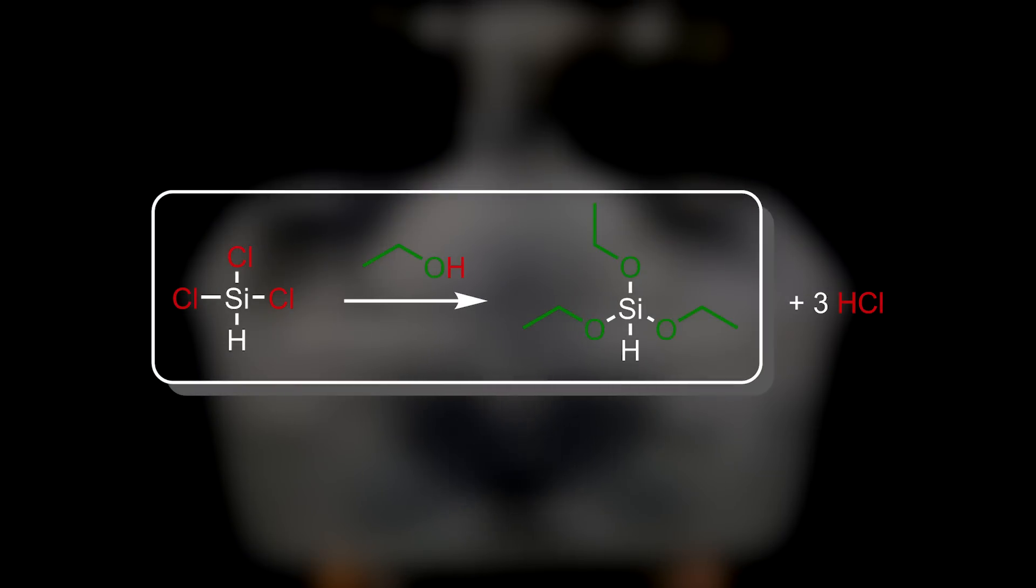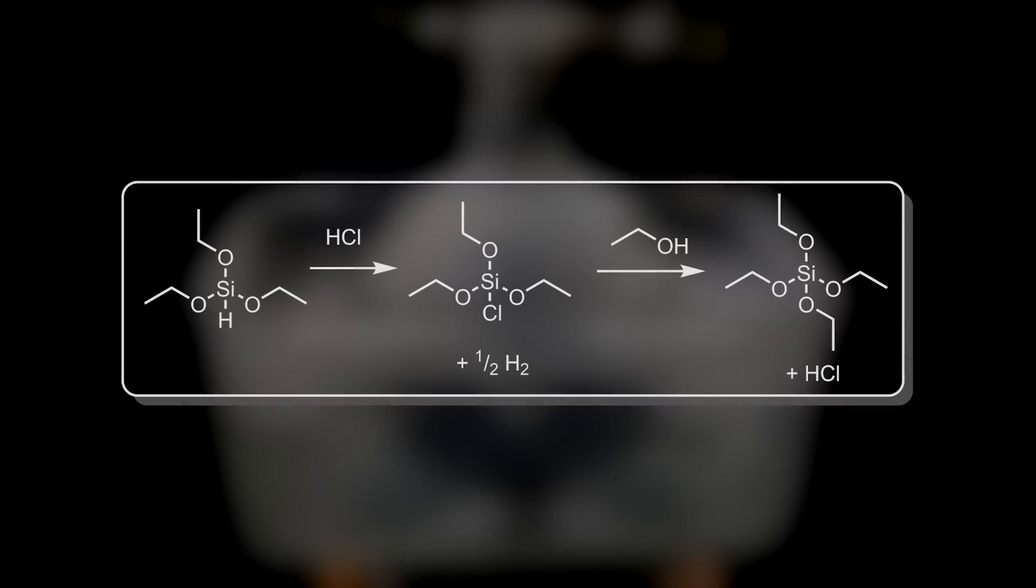In this reaction, trichlorosilane reacts with ethanol, replacing all the chlorines with ethoxide groups, giving triethoxysilane and hydrogen chloride, that mostly bubbles out of solution. There is also a second unwanted reaction taking place here, where the produced triethoxysilane reacts with hydrogen chloride, forming chlorodiethoxysilane. This can then react with another molecule of ethanol, forming tetraethoxysilane as the major side product. Even if we add only three equivalents of ethanol, this reaction still occurs, and leaves behind unreacted or less substituted starting material.